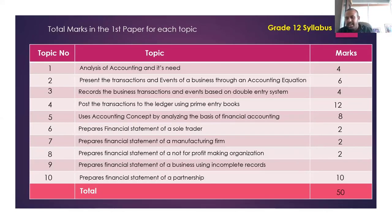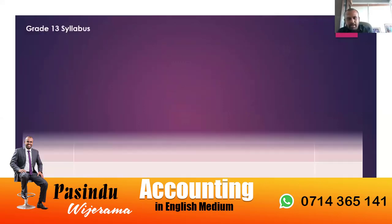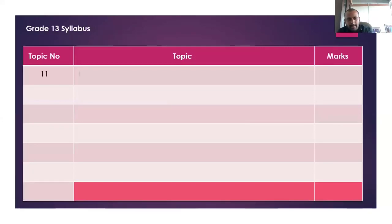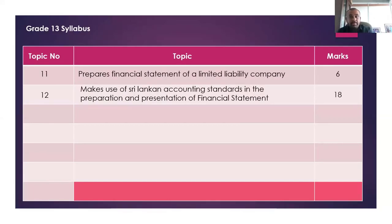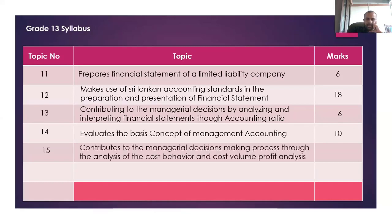That trend is there — you can see the calculation: it's exactly 50. If you look at the Grade 13 syllabus, from the six topics in your first paper, how the marks have been granted: Topic 11 — six marks, Topic 12 — 18 marks (accounting standards, 18 marks), Topic 13 — six marks.